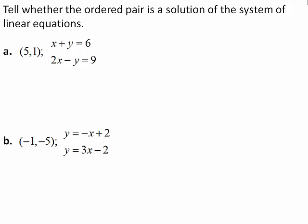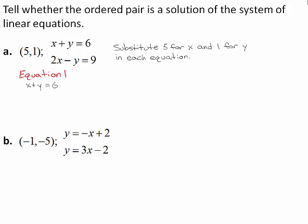The system is: x plus y equals 6, and 2x minus y equals 9. Substitute 5 for x and 1 for y in each equation. Begin by writing the first equation, x plus y equals 6. Substituting gives 5 plus 1 equals 6.